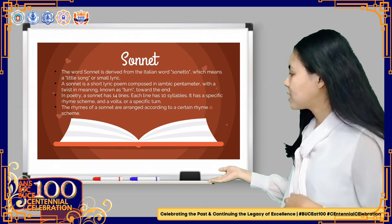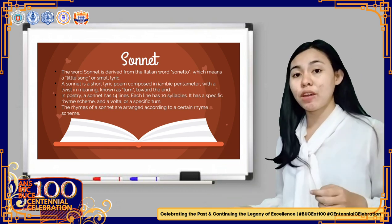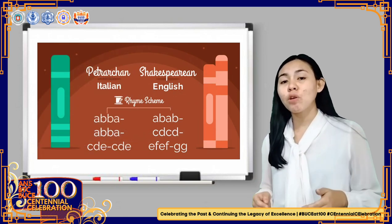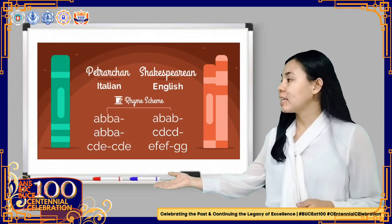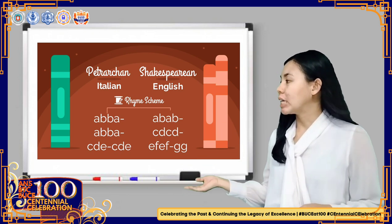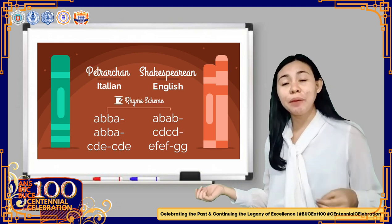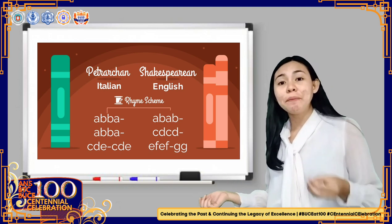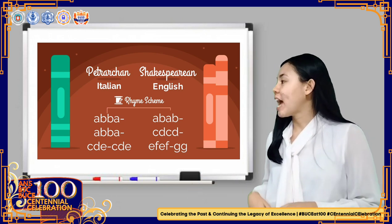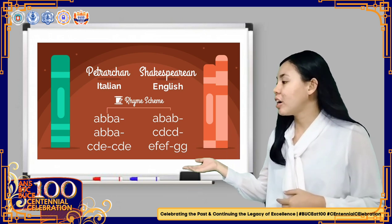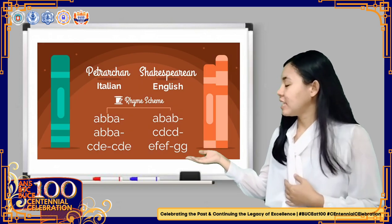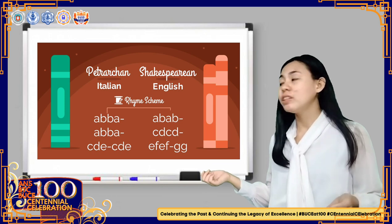A sonnet has a specific rhyme scheme and a volta, or a specific turn. Sonnets have six major types, but the two basic forms are called Petrarchan or Italian sonnet and Shakespearean or English sonnet. The rhyme scheme of a Petrarchan or Italian sonnet is ABBA, ABBA, CDE, CDE. On the other hand, the Shakespearean or English sonnet's rhyme scheme is ABAB, CDCD, EFEF, GG.